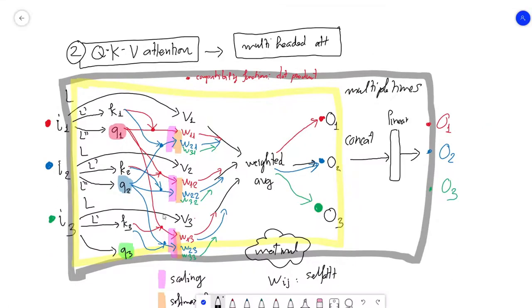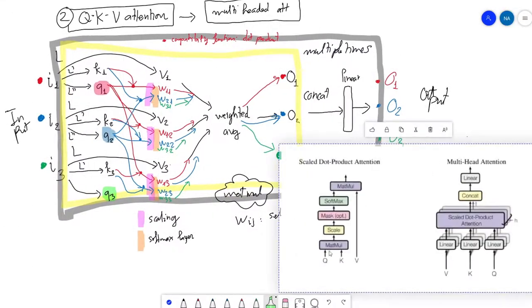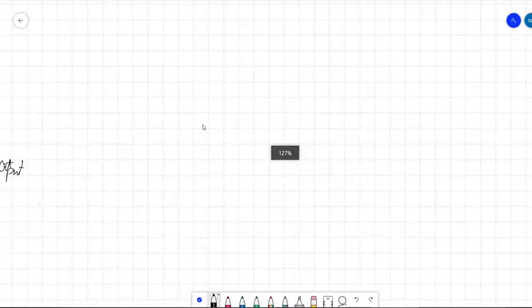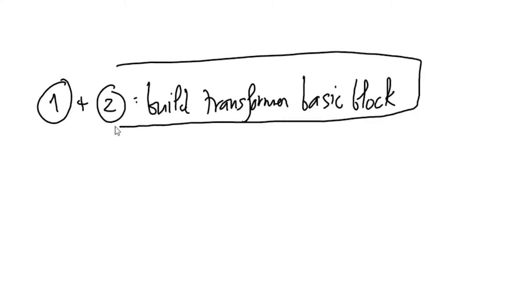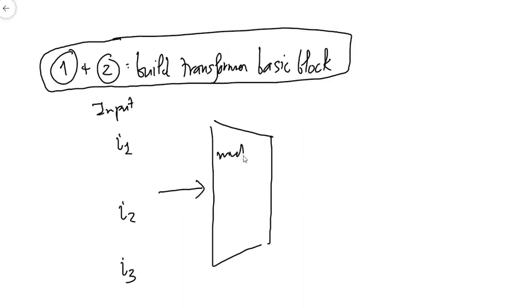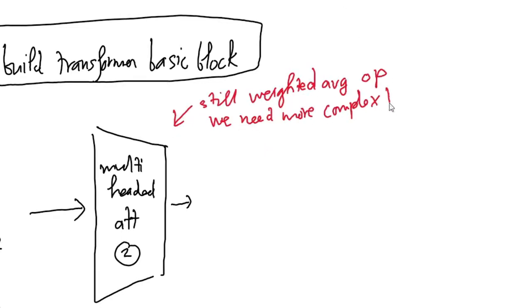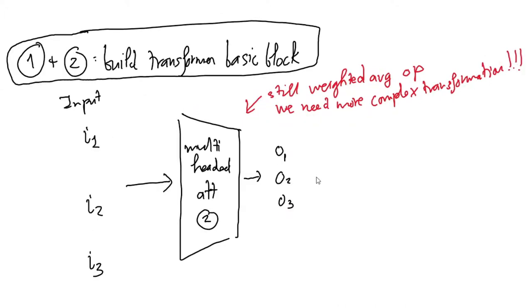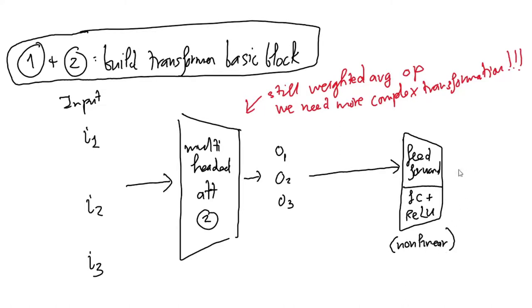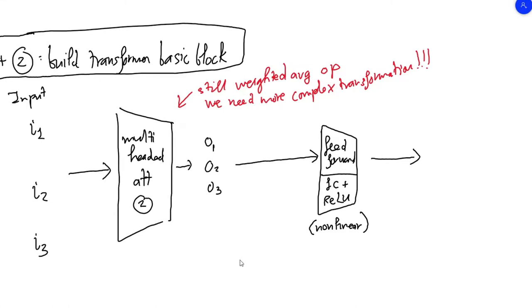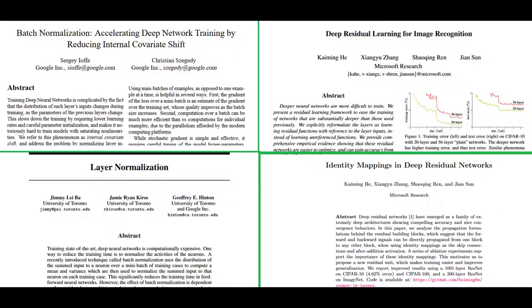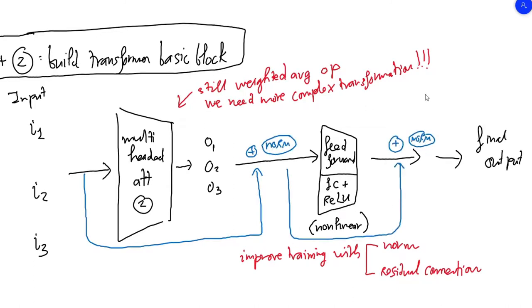The input to multi-head attention is a set of items, these items attend to each other, and the final output is a new set of items. After multi-head attention, we add a feed-forward module — essentially a fully connected layer and a ReLU layer — introducing non-linear transformation so the block has more capacity. Finally, since it is hard to train a very deep network without normalization and residual connections, we add those too. This completes the transformer basic building block.